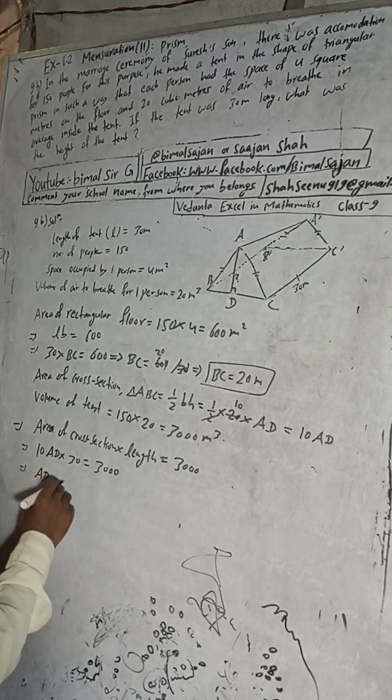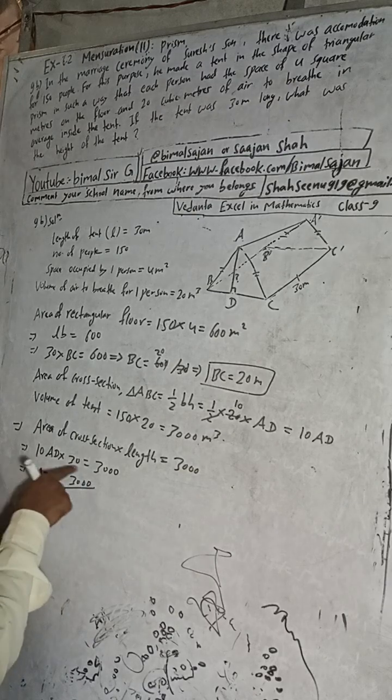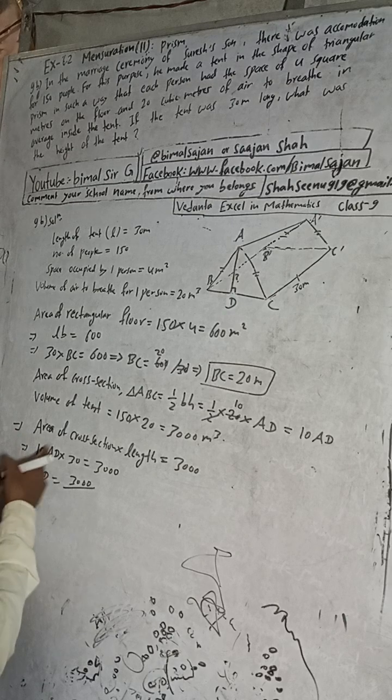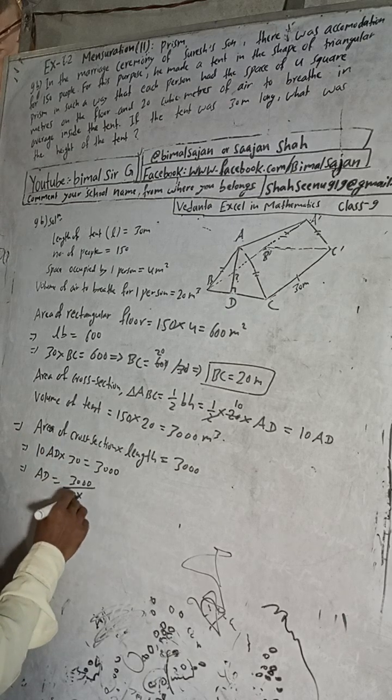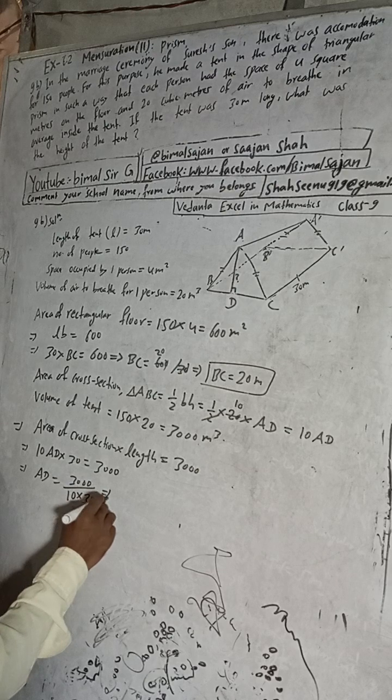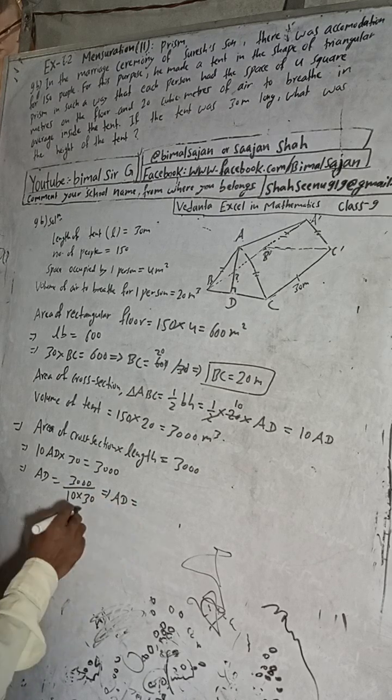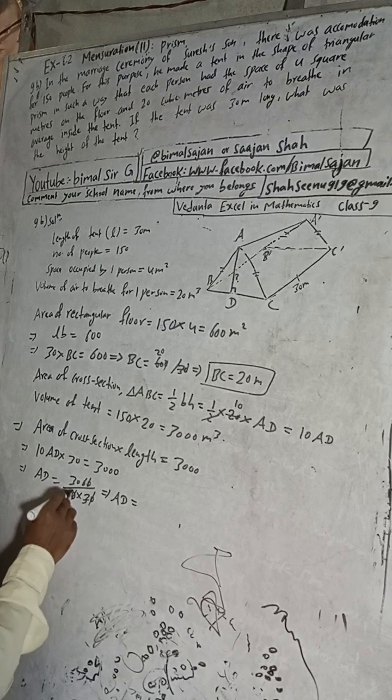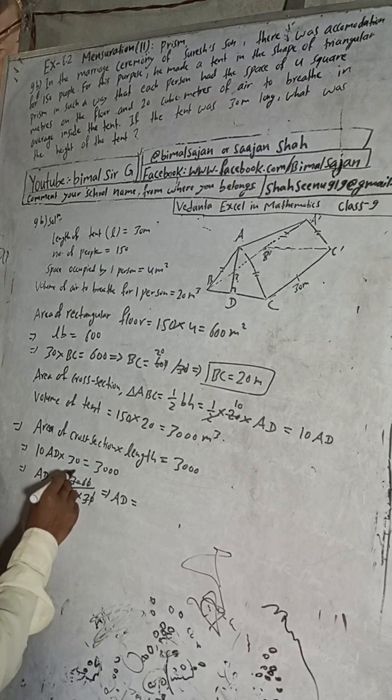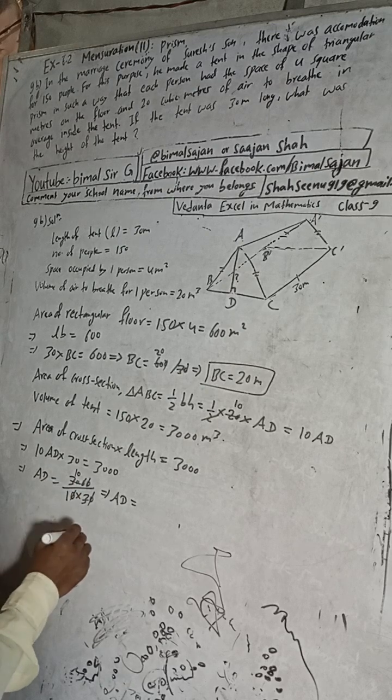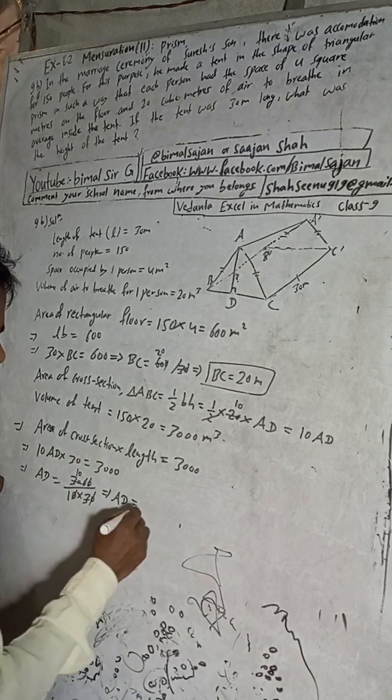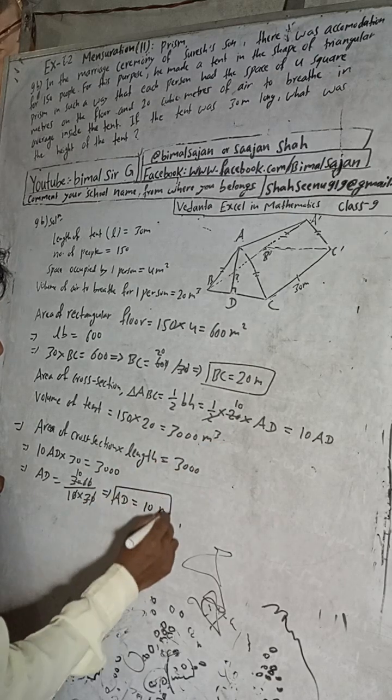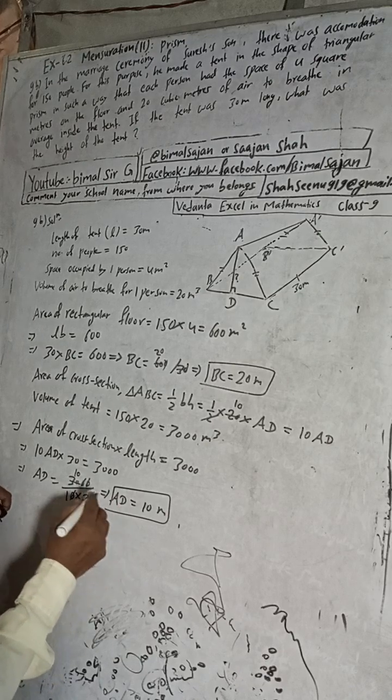This part and that part is called area of cross section. When you multiply with this length, we will get volume. And this volume of the tent is how much? The amount of air, that much will be. This volume is 3000. Now area of cross section we have got, 10 AD into length, 30, is equal to 3000.